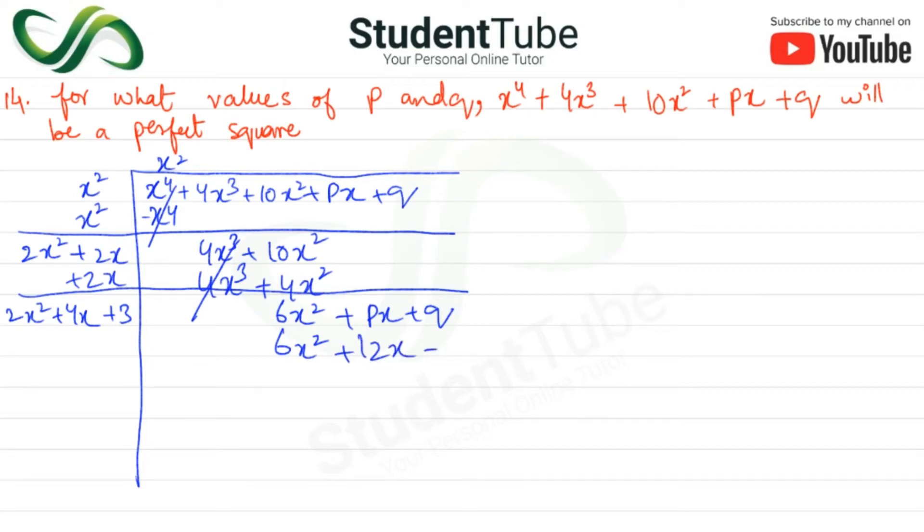12X plus 3X, 3 is 9. 3 square is 9, minus minus, this is cancelled. Now here is -9 + Q, then -12X and